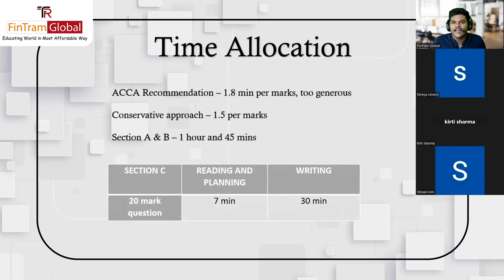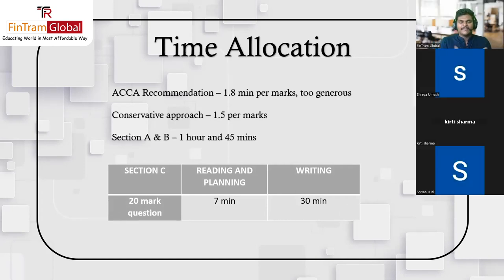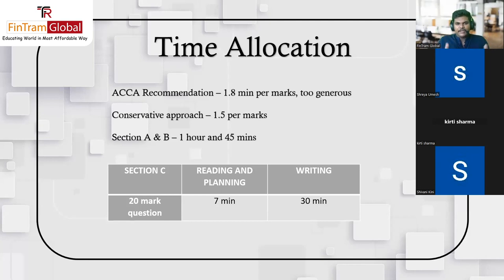For Section C, for each 20-mark question I will allocate 37 minutes. Out of these 37 minutes, the first seven minutes will be allocated for reading and planning the particular scenario. So for each of the 20-mark questions in Section C, take 37 minutes total, with the first seven minutes for reading and planning.